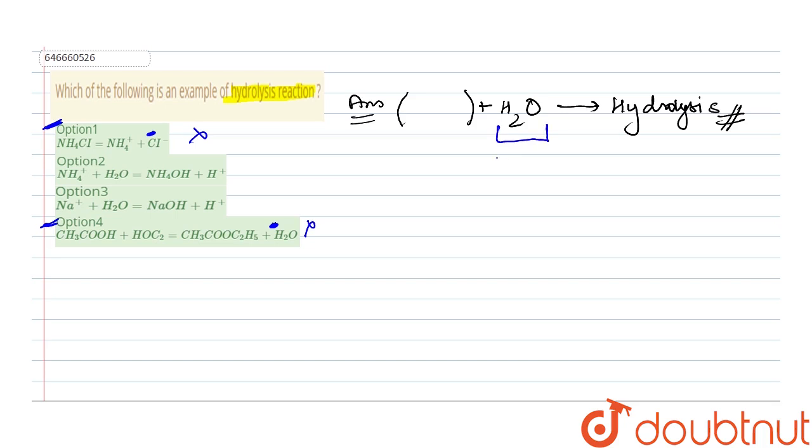Now if we see option number two, then these two might be the answer. So first of all we will see option number three. Option number three says Na+ plus water gives us NaOH plus H+ ion.